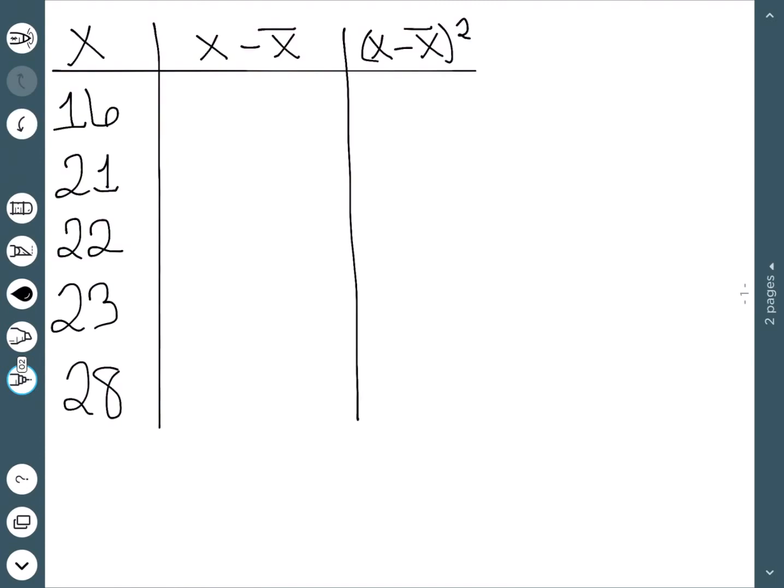Here's our first example. Our first step was to make this table with three columns with our data points in the first column. The next step was to find the mean, and I've already done that and know that the mean here is 22.